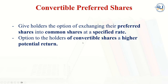The option to convert gives the holder of convertible shares a higher potential return. Common shares sometimes have more value, and preferred shareholders receive dividends at a fixed rate — for example, $2 per share regardless of how high profits go. So if a preferred shareholder believes there is potential for higher profits in the future and those profits will be distributed as dividends among common shareholders, they may choose to convert from preferred to common shares.